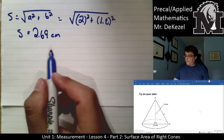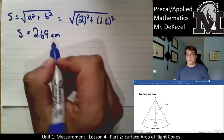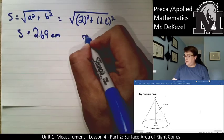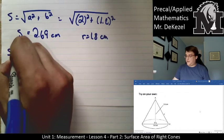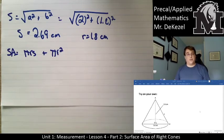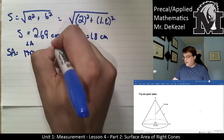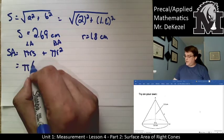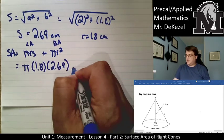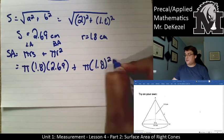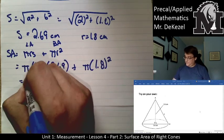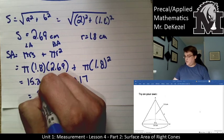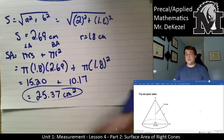Now we have the slant height and can plug it into the surface area formula. The radius is 1.8 centimeters. Surface area equals πrs plus πr². I recommend putting that on your formula sheet, labeling the lateral area and base area parts. So: π times 1.8 times 2.69, plus π times 1.8 squared. That gives 15.20 plus 10.17, so the surface area is 25.37 centimeters squared.